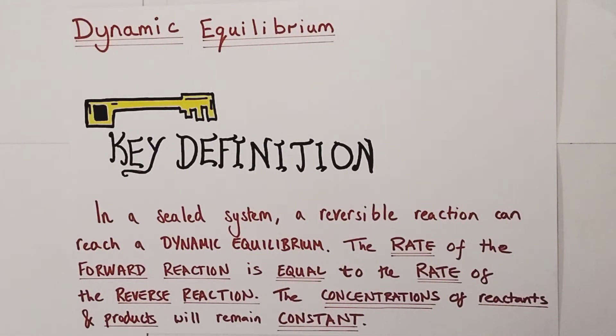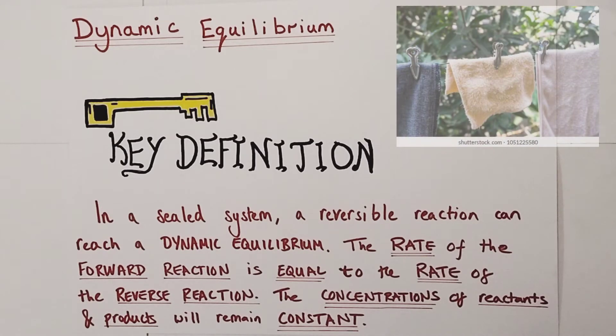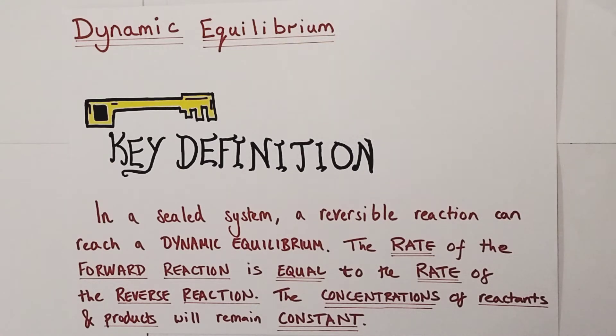I did say I'd give you a really simple example of a dynamic equilibrium in the home, so consider a damp towel. If you put a damp towel out on a washing line to dry, then water molecules will evaporate from the surface of the towel and the towel will become dry over time. That is an example of an open system and not a dynamic equilibrium.